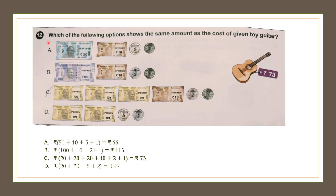Question number 12: Which of the following options shows the same amount as the cost of the given toy guitar? The cost of the guitar is Rs. 73. Now let's check the options.